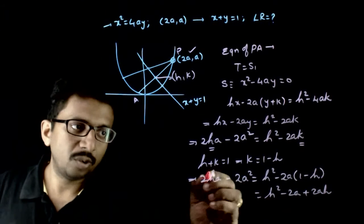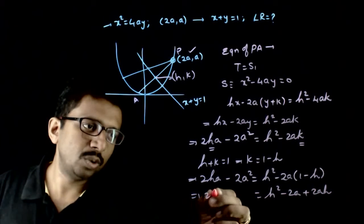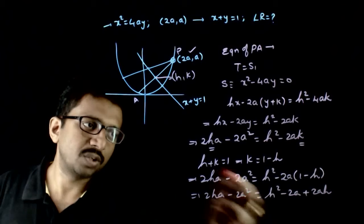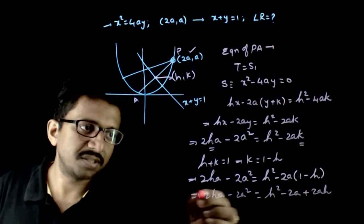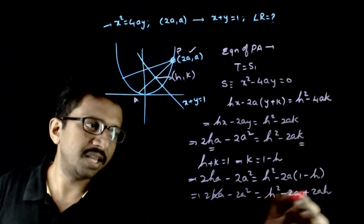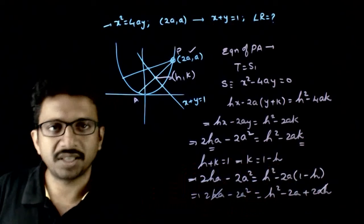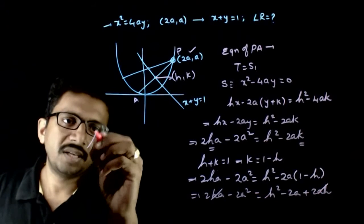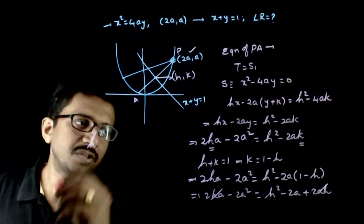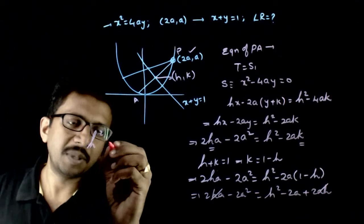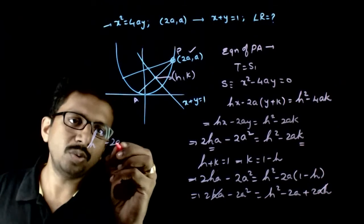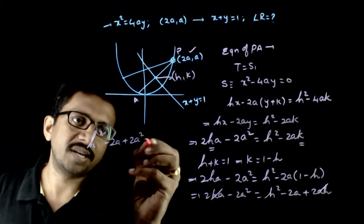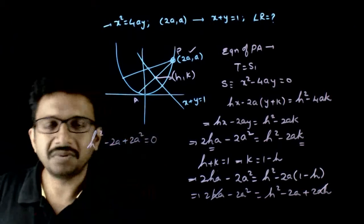Substituting k = 1 - h: 2ha - 2a² = h² - 2a(1 - h) = h² - 2a + 2ah. The terms 2ha and 2ah cancel out, giving us effectively h² - 2a + 2a² = 0.